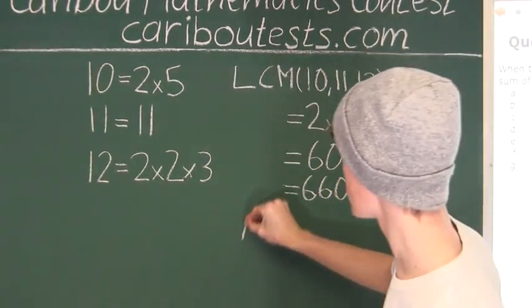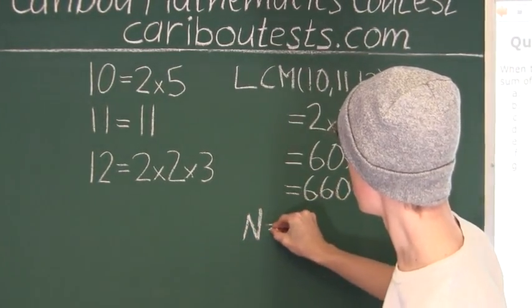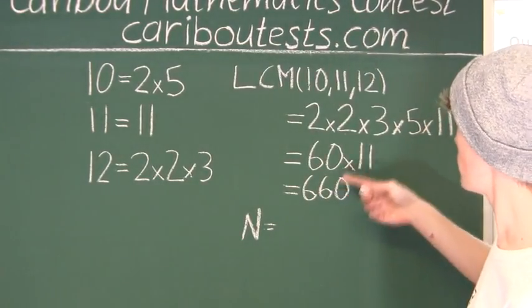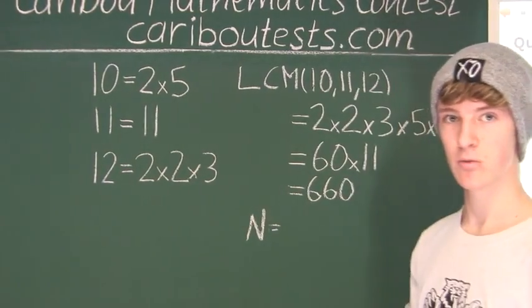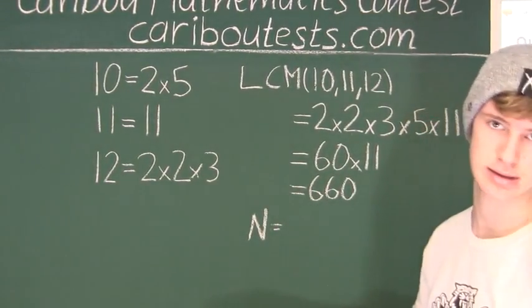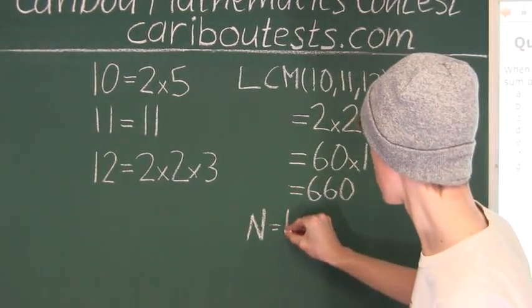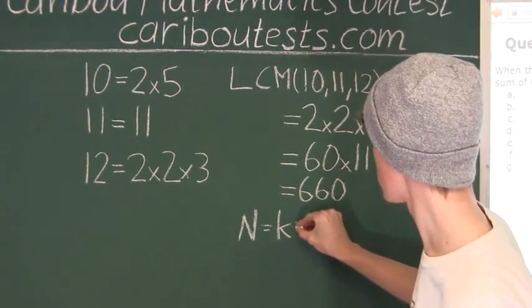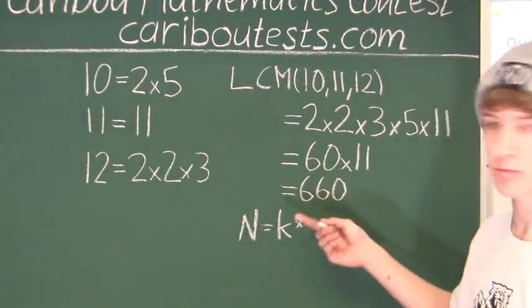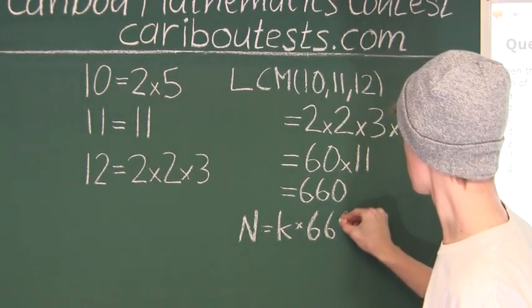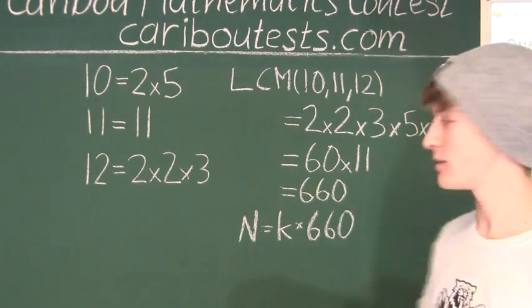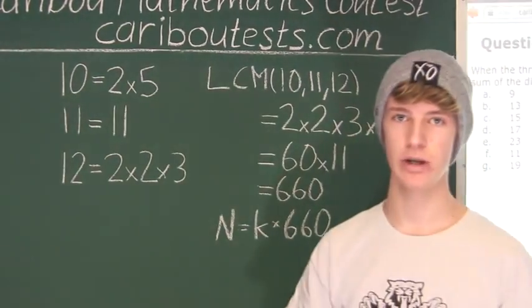Okay, but now we want to find N. So we know that the lowest common multiple of 10, 11, 12 is 660. And like we said before, we take any multiples, so let's say k, and then we multiply this by the lowest common multiple, which is 660. And then of course we still have to add the remainder, which from the question we know is 7.